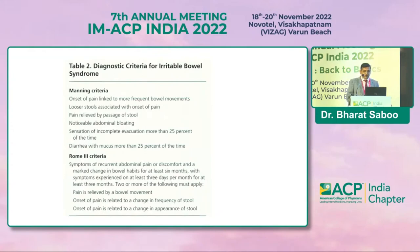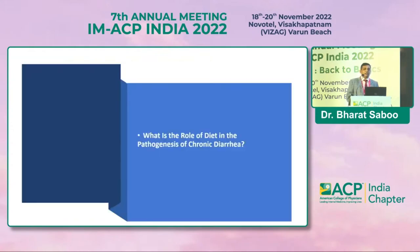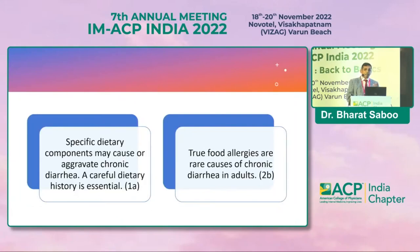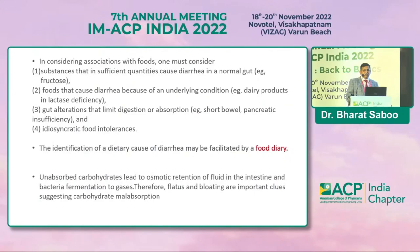Diet plays an important role in chronic diarrhea. A careful dietary history is a must for any patient with chronic diarrhea. True food allergies are rare causes of chronic diarrhea in adults. When considering association with food, we should consider substances that in sufficient quantity cause diarrhea in a normal gut, such as fructose.